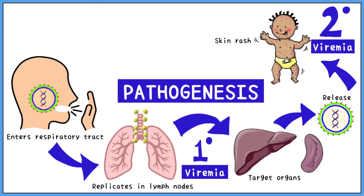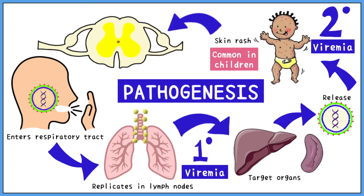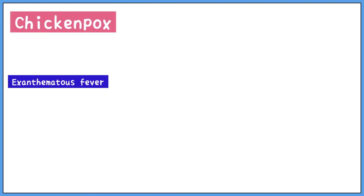This condition is very common in children. Once the rash has subsided, the virus travels to the dorsal root ganglia, where it remains latent for several decades. Chickenpox, or the skin rash, is an exanthematous fever very common in children.